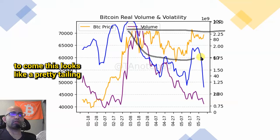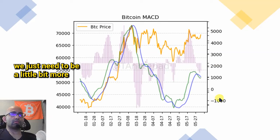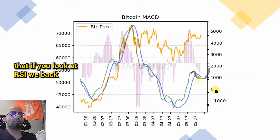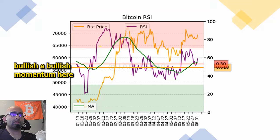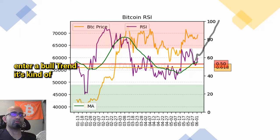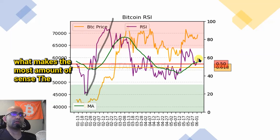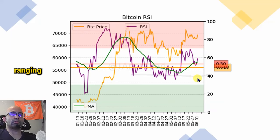This looks like a pretty telling inverse head and shoulders type pattern on Bitcoin. So I think we just need to be a little bit more patient. I think the MACD is probably going to cross back up. If you look at the RSI, we backtested all the support — literally went straight to support and now we're going back up. So this looks like entering a bullish momentum. That kind of looks like a pretty telling accumulation pattern on the RSI — this is raw RSI. You're probably going to enter a bull trend. The squeeze is most likely tight on the RSI as well, as we've been kind of ranging here.